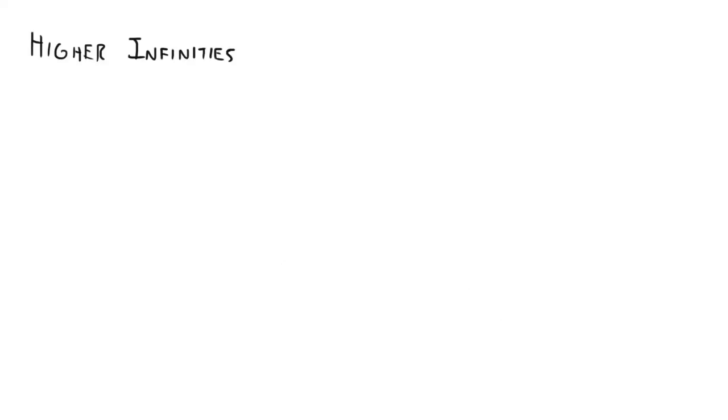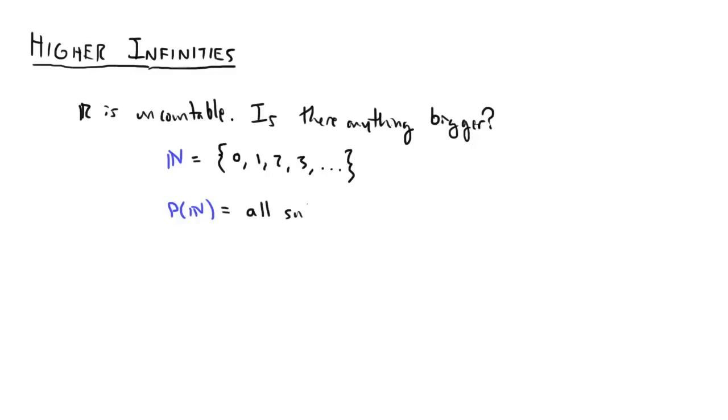So now we know there is at least one uncountable set, and it turns out that the real numbers are also uncountable. But is there anything even bigger? If we go back to N, the natural numbers, we can create its power set P of N by forming the set which contains all subsets of N. If we applied Cantor's diagonalization argument again, we'd see that P of N is also uncountable.